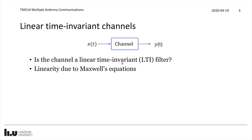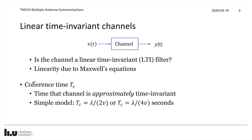However, if we zoom in at a particularly short period of time then we have approximate time invariance, and the coherence time represents that. It is the time over which a channel is approximately time invariant, allowing us to utilize everything we know about signals and systems. One typical model defines the coherence time t_c as lambda divided by 2 times v, where lambda is the wavelength and v is the speed at which we are moving.